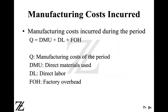First, you have to calculate the total manufacturing cost incurred during the period, which is designated by Q. Q is equal to DMU — direct material used — plus direct labor, plus factory overhead, or manufacturing overhead. Once you have this, you can create the schedule of cost of goods manufactured.